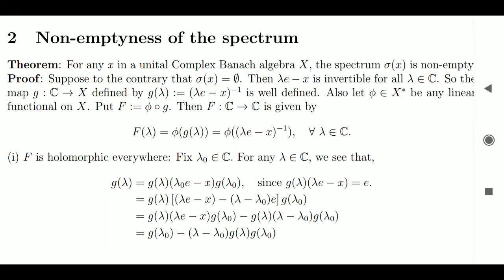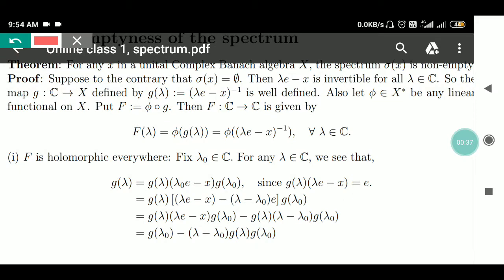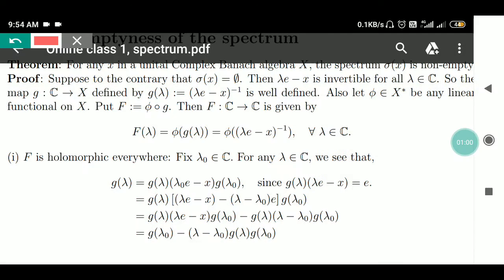Let us prove the theorem. Suppose to the contrary that Σ(X) is empty, meaning the spectrum is empty. Since Σ(X) is empty, there does not exist any λ for which λe minus X is not invertible in X. That means for every λ in ℂ, λe minus X is invertible.